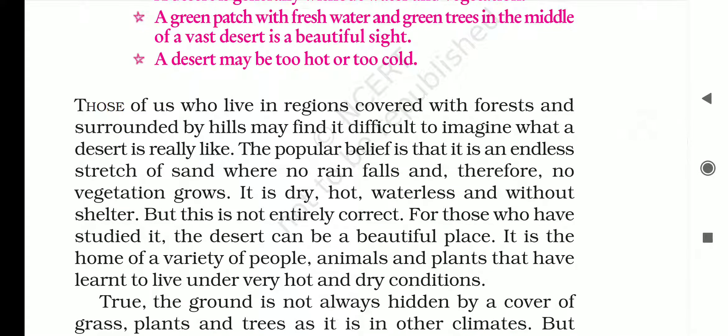Those of us who live in regions covered with forest and surrounded by hills may find it difficult to imagine what a desert is really like. The popular belief is that it is an endless stretch of sand where no rain falls and therefore no vegetation grows. It is dry, hot, waterless and without shelter. But this is not entirely correct. For those who have studied it, the desert can be a beautiful place — the home of a variety of people, animals and plants that have learned to live under very hot and dry conditions.